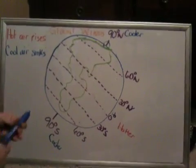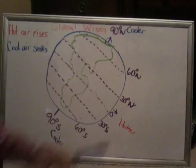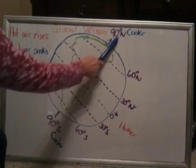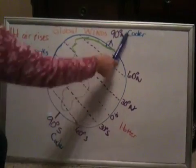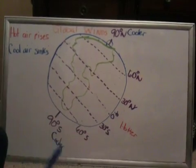Okay guys, here we are again. We're going to talk about global winds. Here's the Earth. We've got the poles up here at 90 degrees north, 90 degrees south. This air here is cooler. This is the equator right here in the middle. This is the hotter regions.